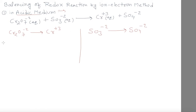Then I am going to balance the atoms except oxygen and hydrogen. I will put here 2, making this 2Cr³⁺. Now its oxidation number: 2X is equal to plus 6. And in this one, 2X gives 14, so plus 12.